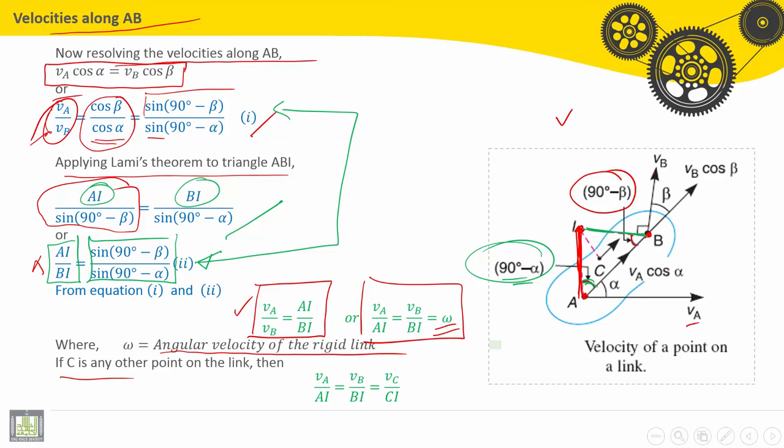If C is another point on the link AB, so by the way, V_A divided by AI is equal to V_B divided by BI is also equal to V_C divided by CI.